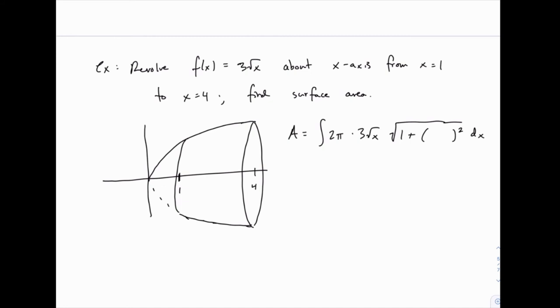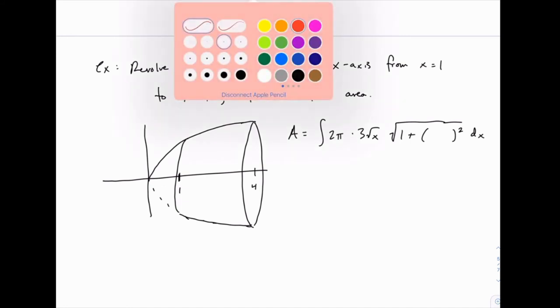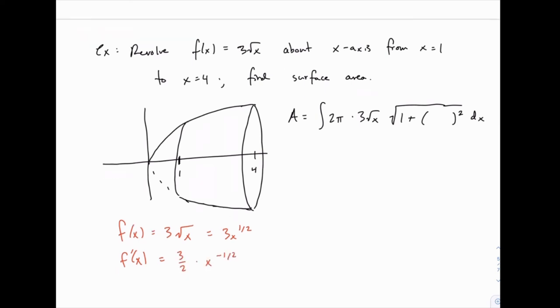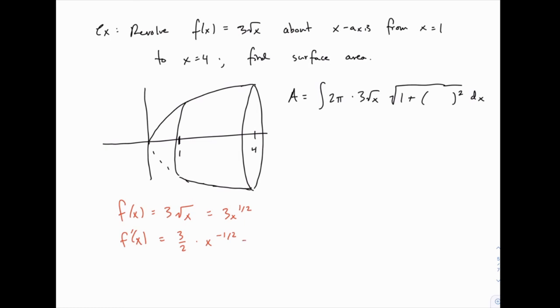So we need the derivative of 3 square root of x. Let's pause and do that on the side here. If f(x) equals 3 square root of x, that's the same as 3x to the 1/2. So the derivative would be 3 times 1/2 times x to the negative 1/2, which we could rewrite as 3 over 2 square root of x.